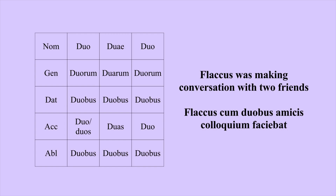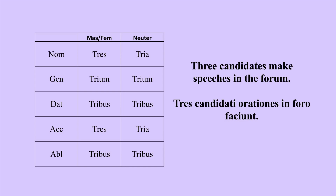To say 'Flaccus was making conversation with two friends': Flaccus cum duobus amicis colloquium faciebat. Now let's look at three. Three is a little different from one and two because the masculine and feminine forms are the same, and the neuter has its own form.